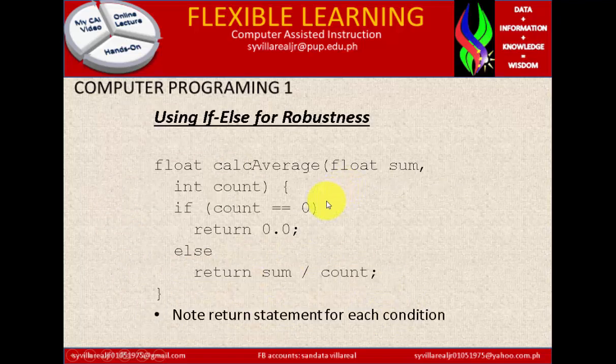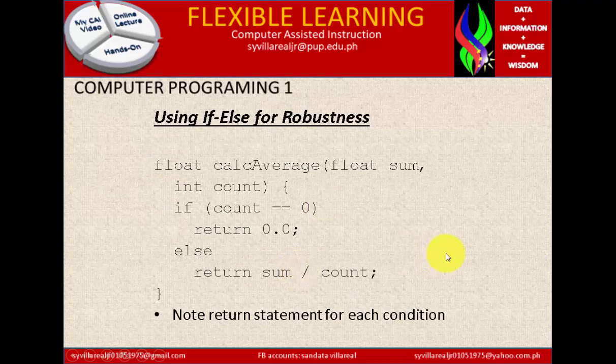Using if-else for robustness. It means to say very clear, very accurate in timing. This is the code which is in a very good condition. Float calc average float sum. It means to say a decimal point when we identified float. And sum is the variable. Integer count is a variable also. If count is exactly equal to zero, then return 0.0. Else, returns sum divided by count.